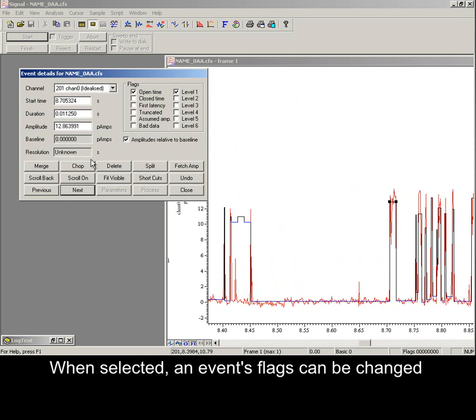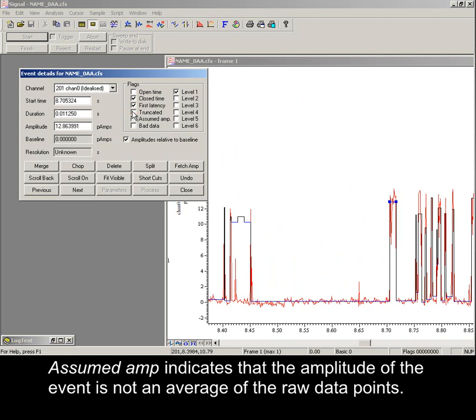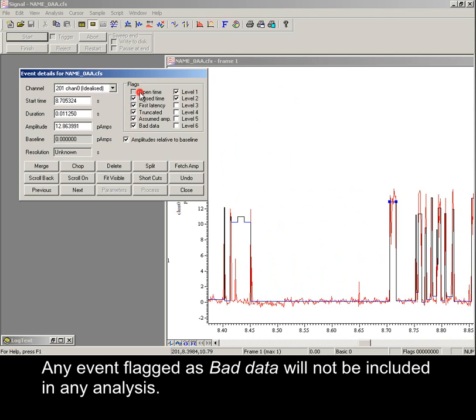When selected, an event's flags can be changed. Assumed amp indicates that the amplitude of the event is not an average of the raw data points. Any event flagged as bad data will not be included in any analysis.